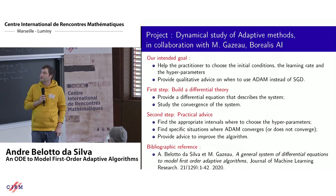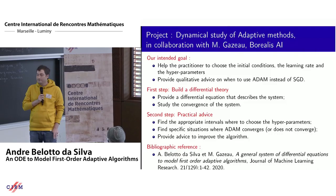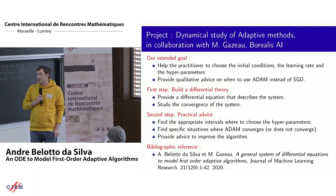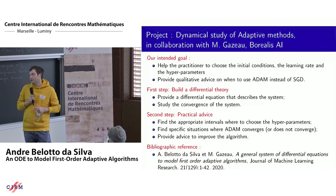In a project with Maxime Gazot, our intended goal was to first help practitioners choose the initial conditions of the learning rate and hyperparameters, and to provide qualitative advice on when to use Adam instead of SGD. Our first step was to build a differential theory — to approach the algorithm via differential equations, provide a differential equation, and study its convergence. Second, to infer practical advice: find appropriate intervals for choosing hyperparameters and give qualitative situations where Adam converges or does not converge. We also partially provide advice to improve the algorithm within the class of adaptive algorithms.